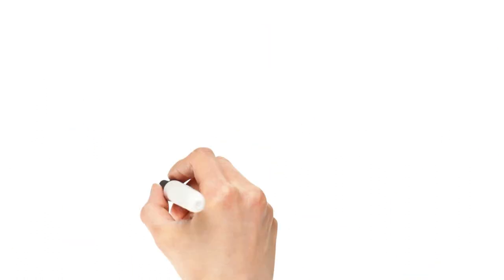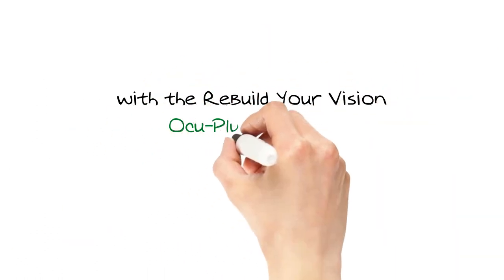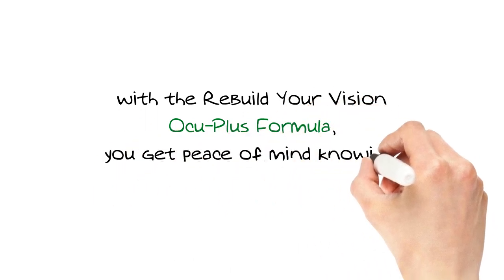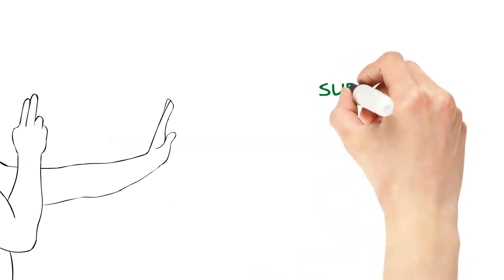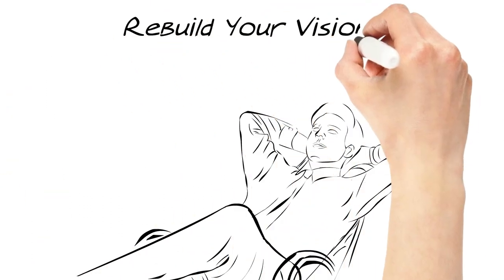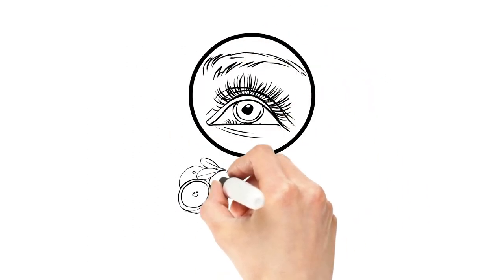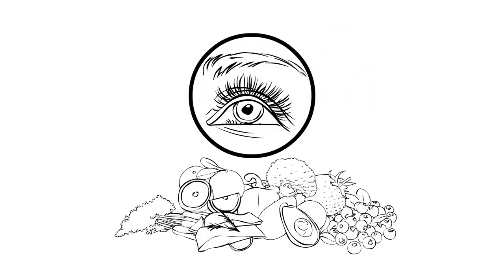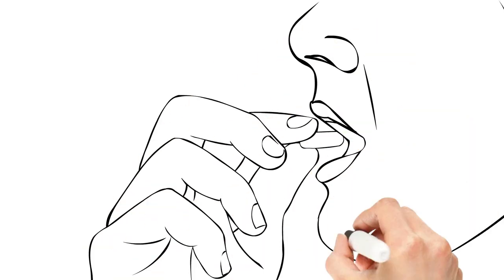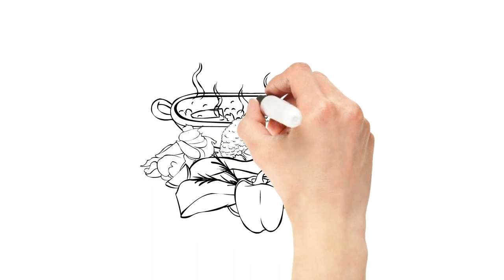As you can see, with the Rebuild Your Vision OcuPlus formula, you get peace of mind knowing you're doing all you can to support and preserve your precious eyesight. You'll rest easy knowing your eyes are getting the nutrients they really need and your body can easily process the nutrients so they can work to support your visual system. And you won't be popping pills left and right or spending half of your day preparing food.